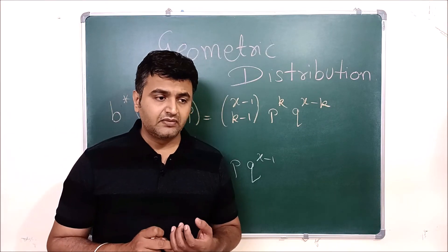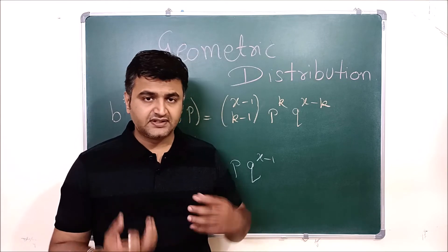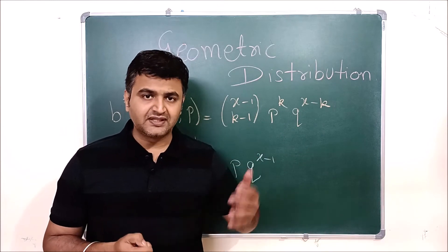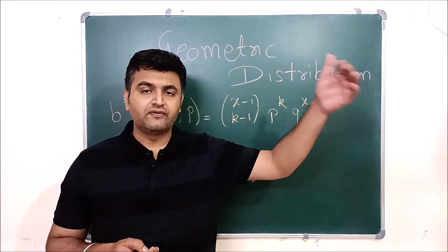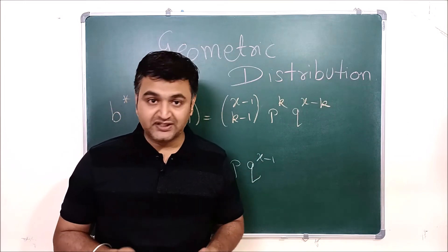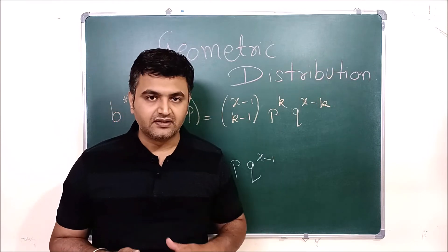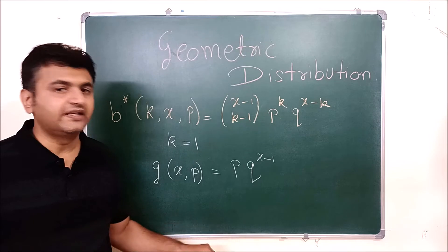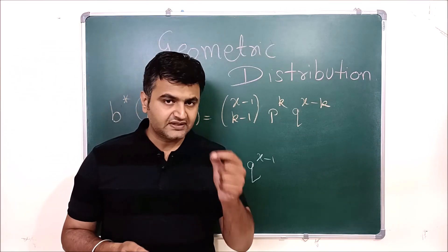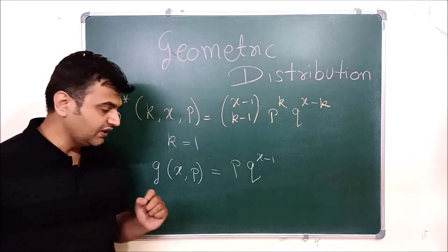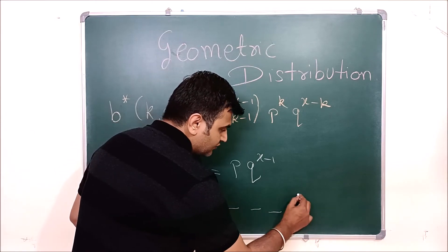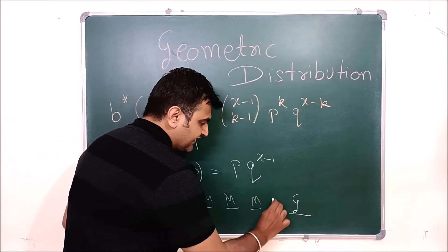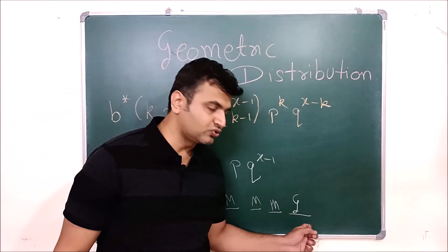We study this separately because the first success always plays an important role in anyone's life. For example, if I am playing Ranji match, my success is when I get an opportunity to play for Team India. My failures count as the number of times I'm playing Ranji, and success means as soon as I get a call to play for the Indian cricket team. Similarly, the first six you hit in a match is a special moment.